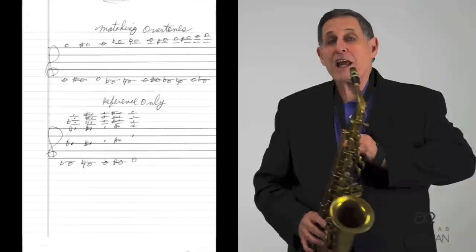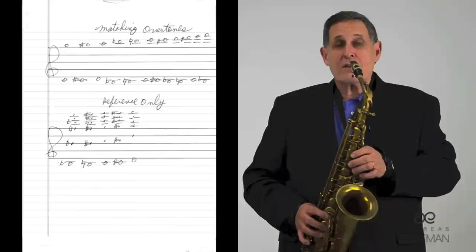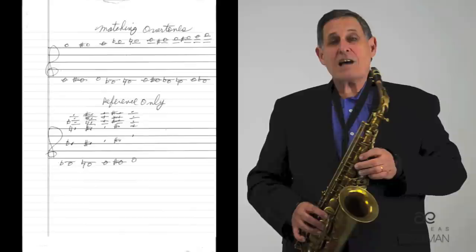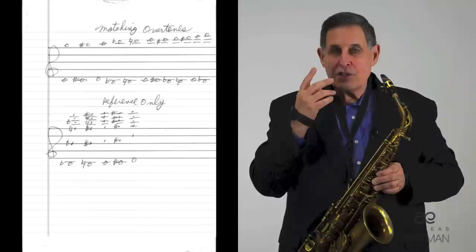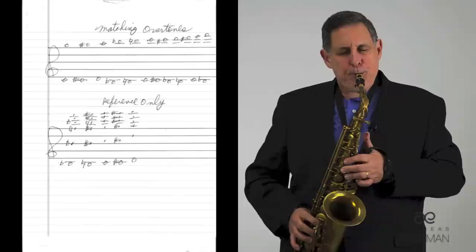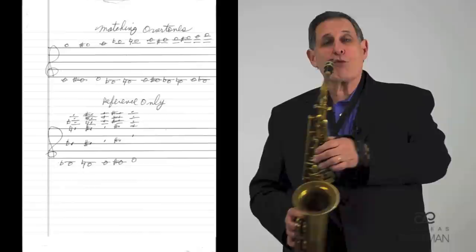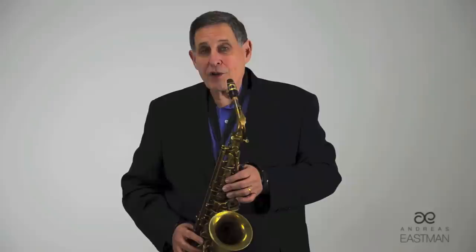Here's how it goes. You finger low C and produce G on top of the staff — you can use the octave key or not. As I'm playing that partial or overtone, I ask myself: what does the area of the throat feel like? And how fast is the air column moving — not how much air, but the speed or velocity of the air. That is the richest, most in-tune sound on the saxophone. I then finger the regular G with the octave key, using the same throat sensation and air speed to match the quality of the overtone — matching overtones.